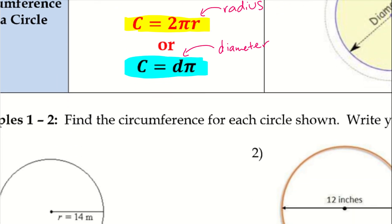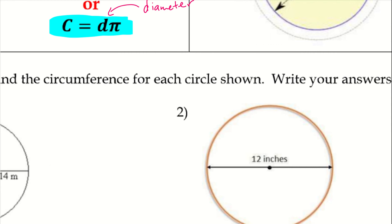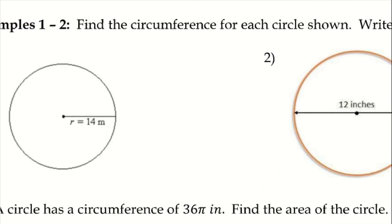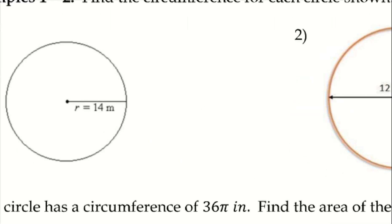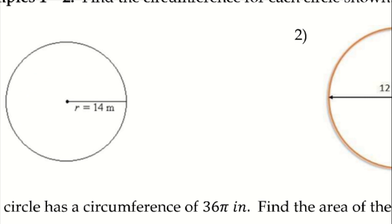Find the circumference for each circle shown. Write your answers in terms of pi, so we just want to leave pi there. Remember, the circumference is different than the area. The area formula finds everything on the inside, while the circumference formula finds the distance all the way around.